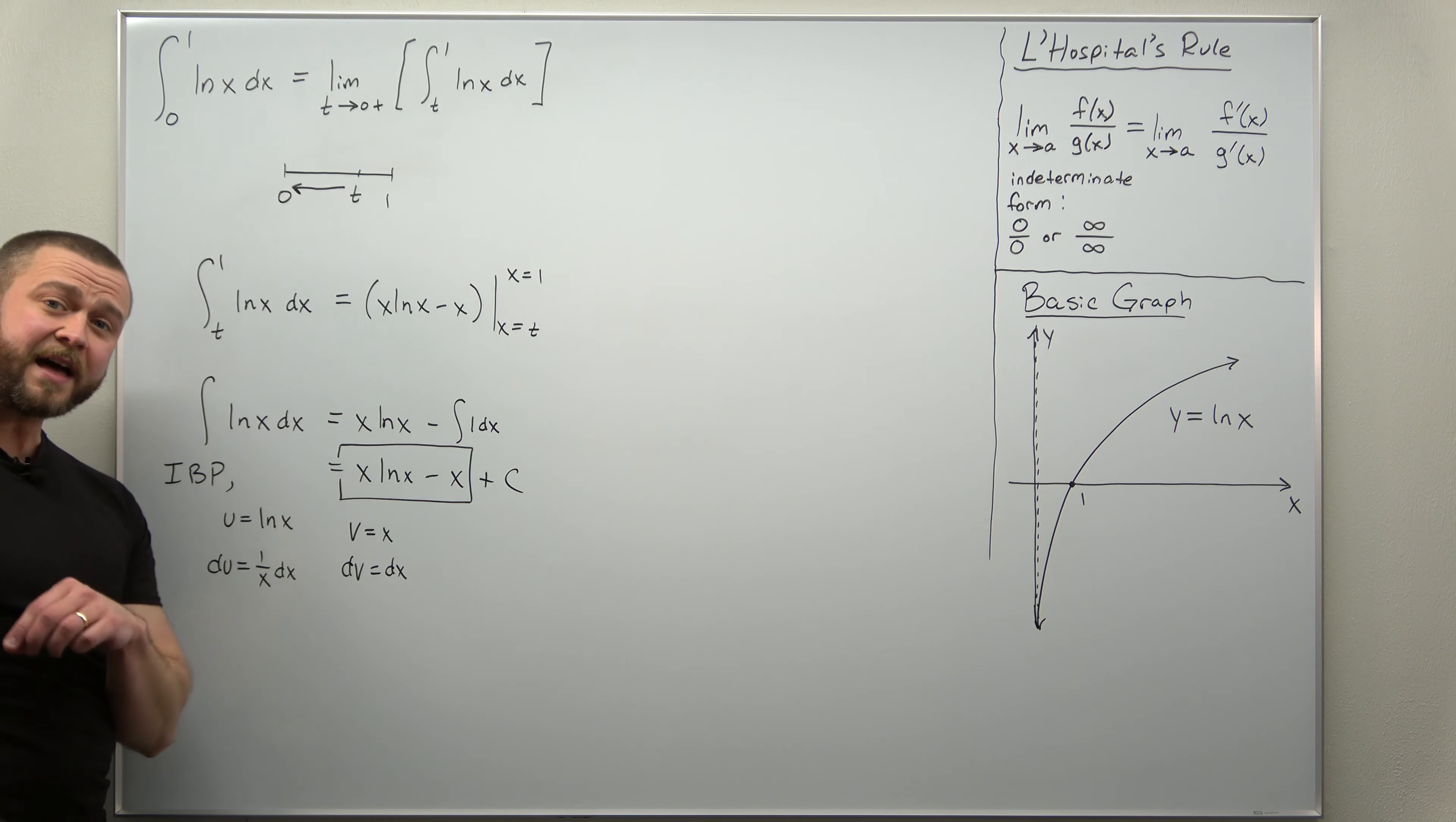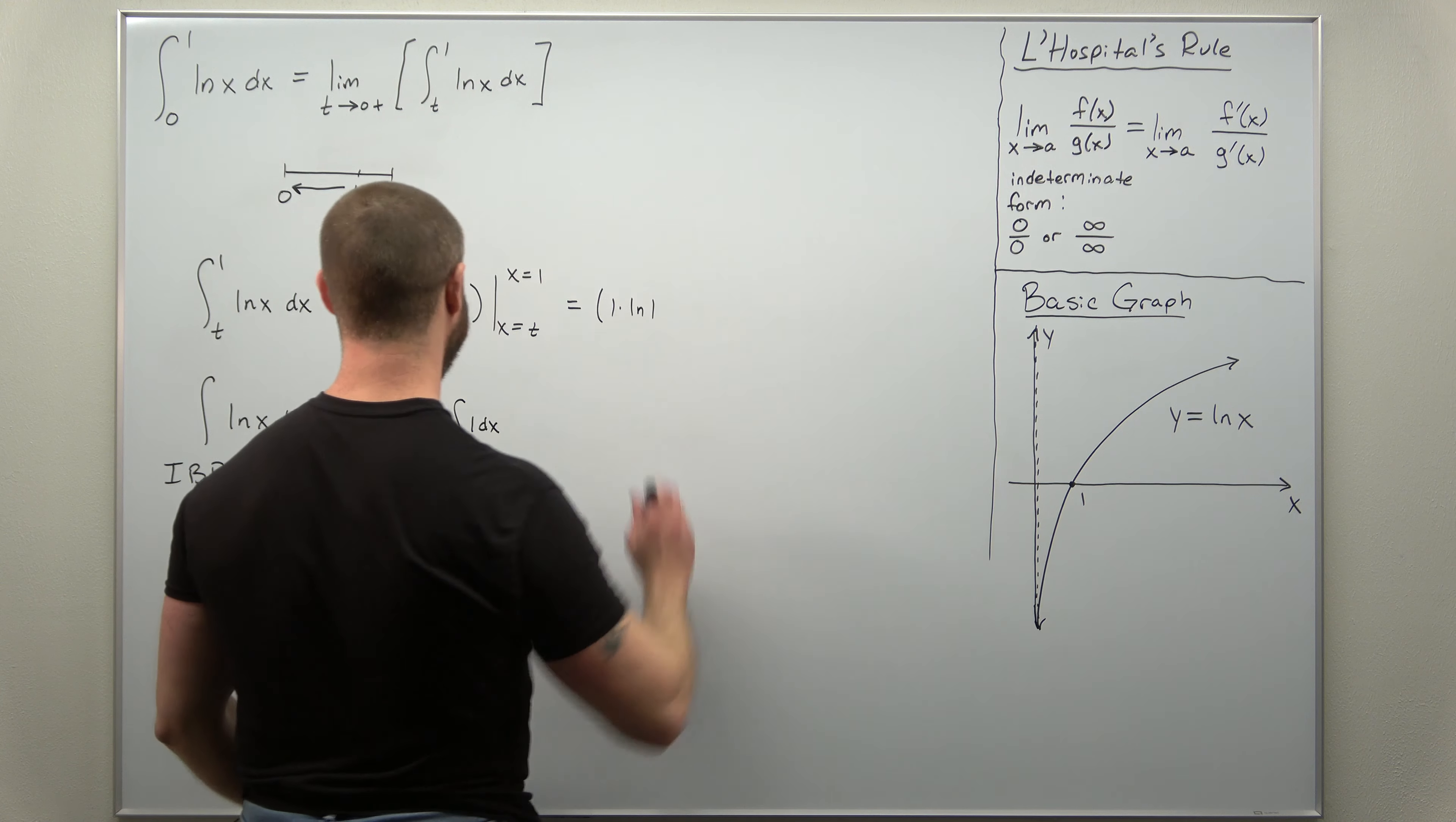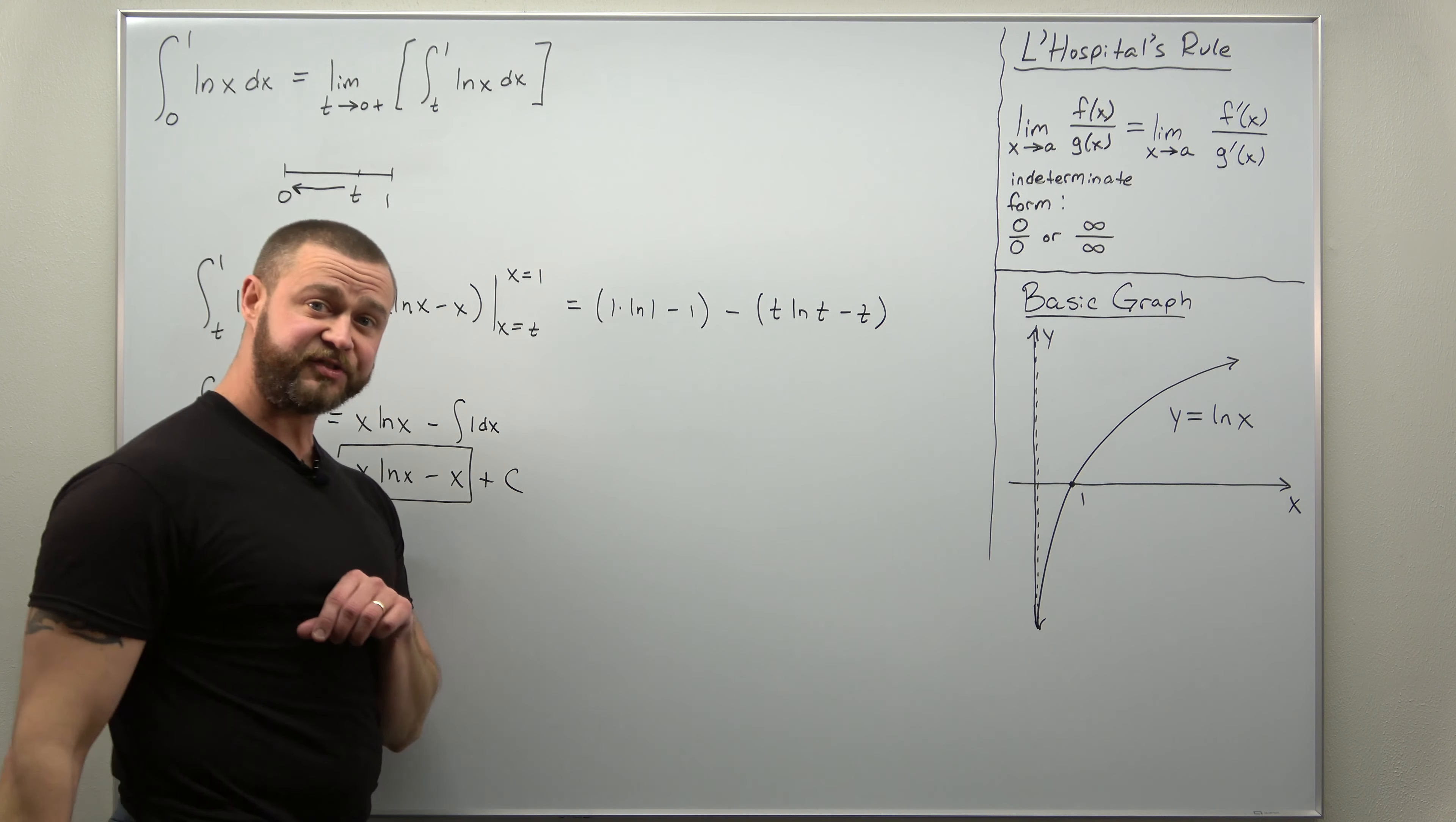And now we can just evaluate that with the Fundamental Theorem of Calculus. Plug in 1, plug in t, and subtract. Let's take our time with that. So plug in x everywhere as 1. So we get 1 times natural log of 1 minus 1. And now do the same thing but plugging in x equals t. So minus t ln t minus t.